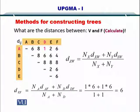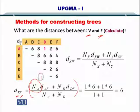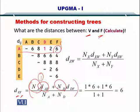Lastly, we calculate the distance between V and F using the same formula. The number of sequences in A is 1, and the distance between A and F is 6. The number of sequences in D is 1. Computing the formula gives the distance between V and F equal to 6.